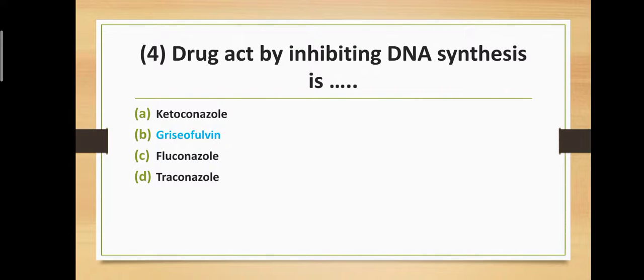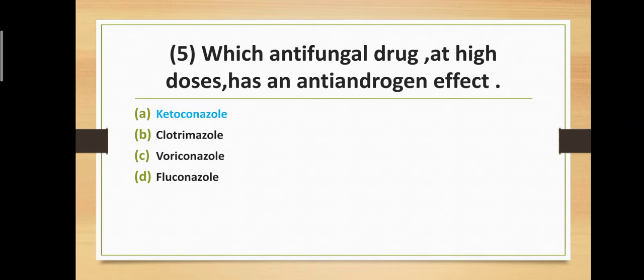Question number four: Which drug acts by inhibiting DNA synthesis? Option A: ketoconazole, Option B: griseofulvin, Option C: fluconazole, Option D: triconazole. The correct answer is Option B — griseofulvin acts by inhibiting DNA synthesis.